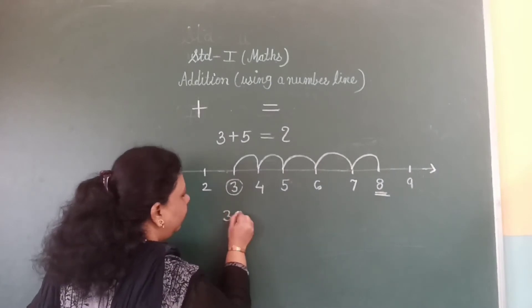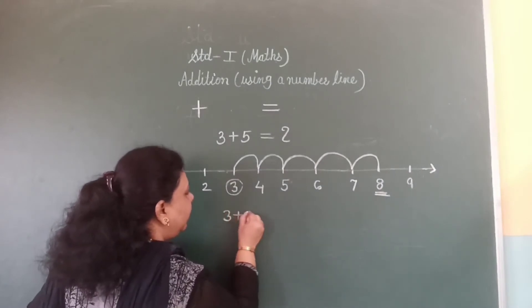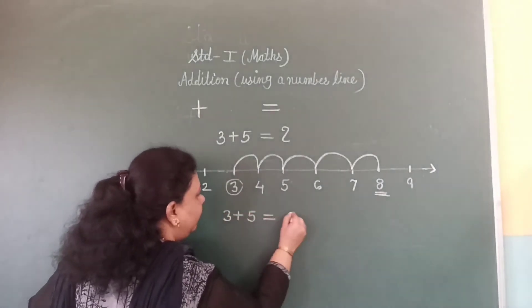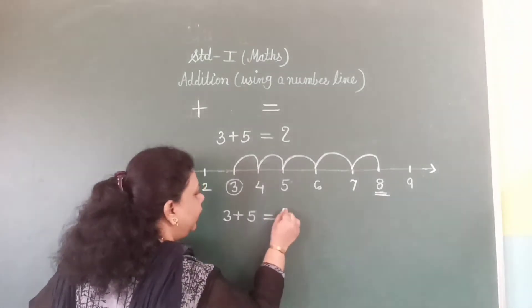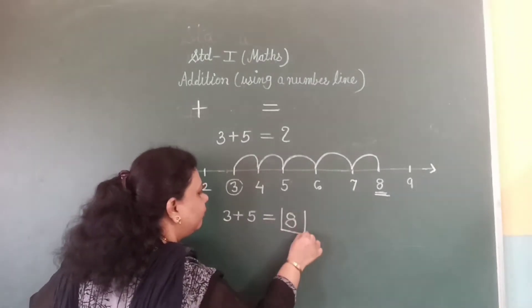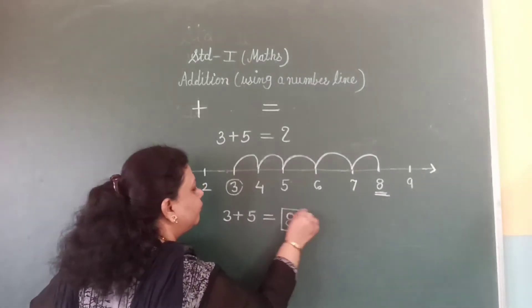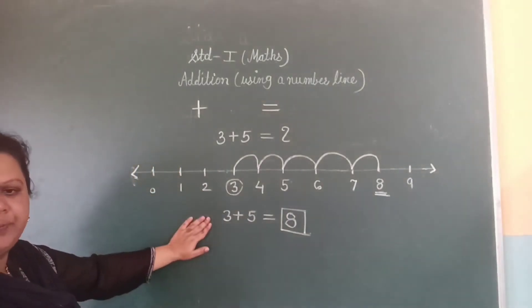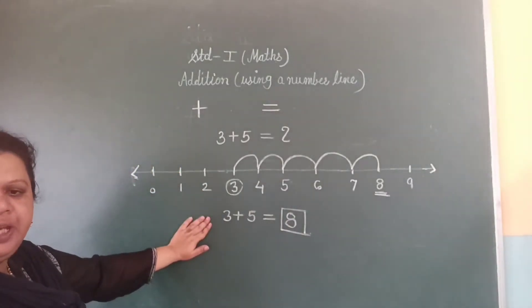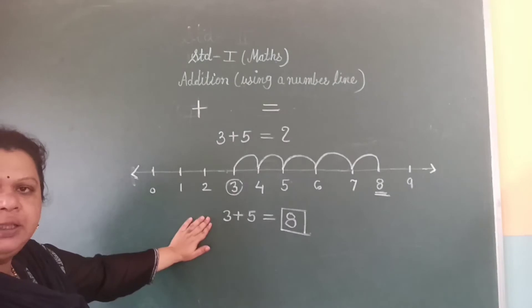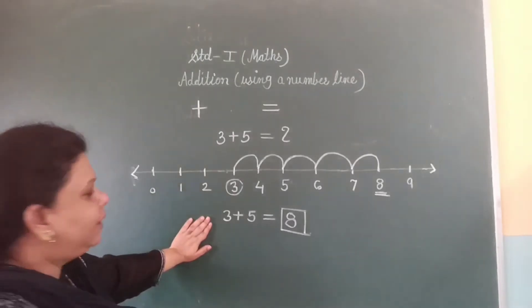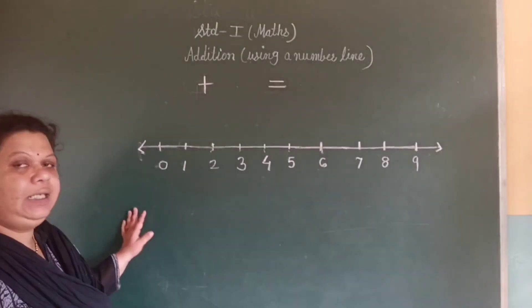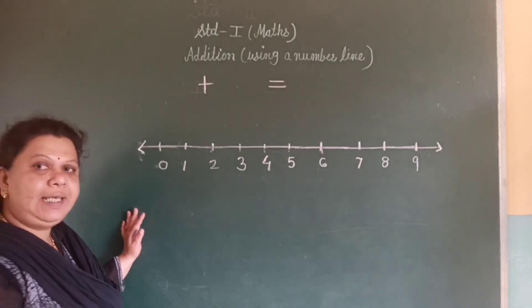So the answer is 8. 3 plus 5 is equal to 8. This sum is known as an addition sum. Let us see the next example.